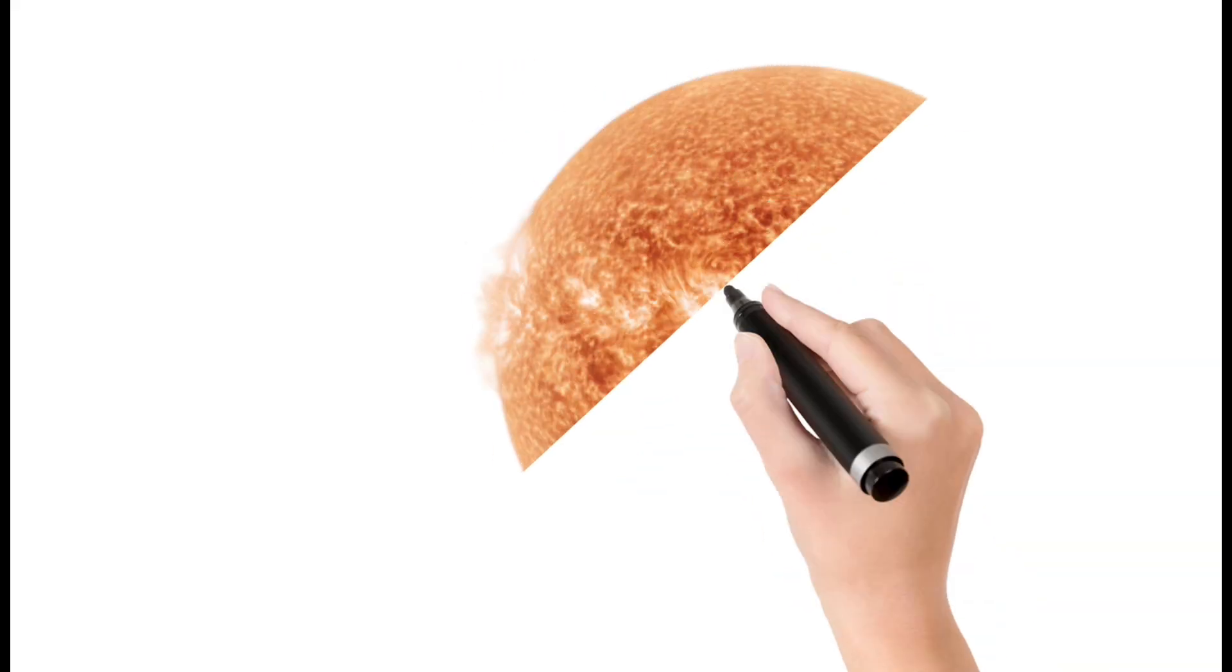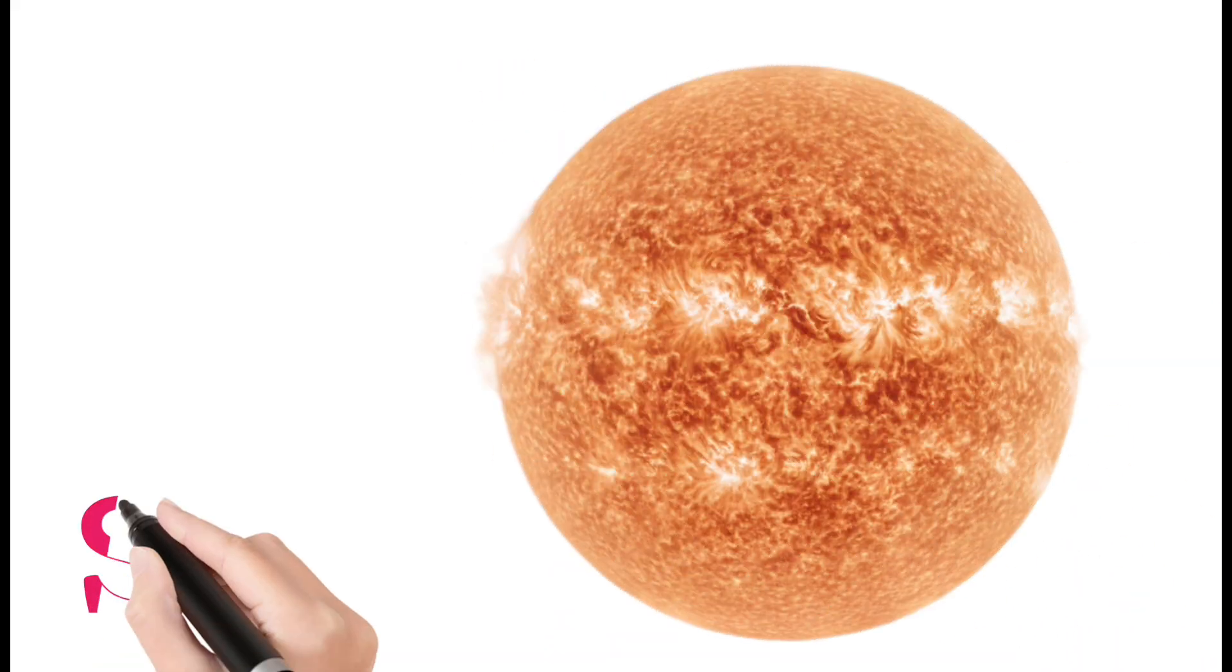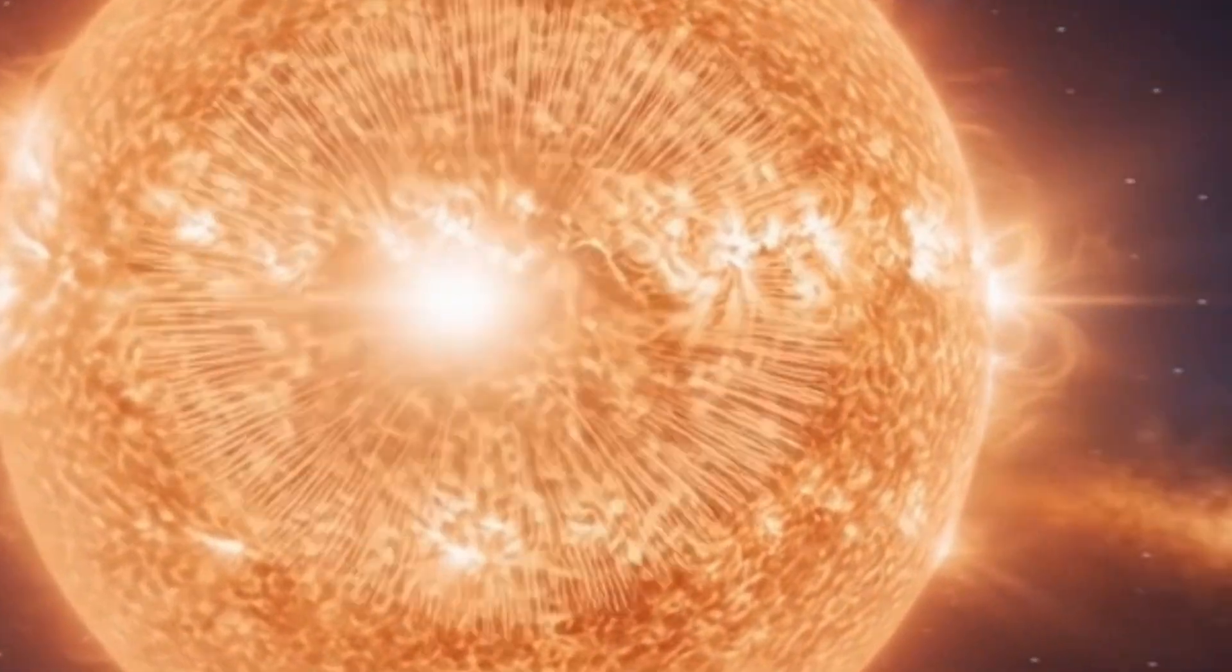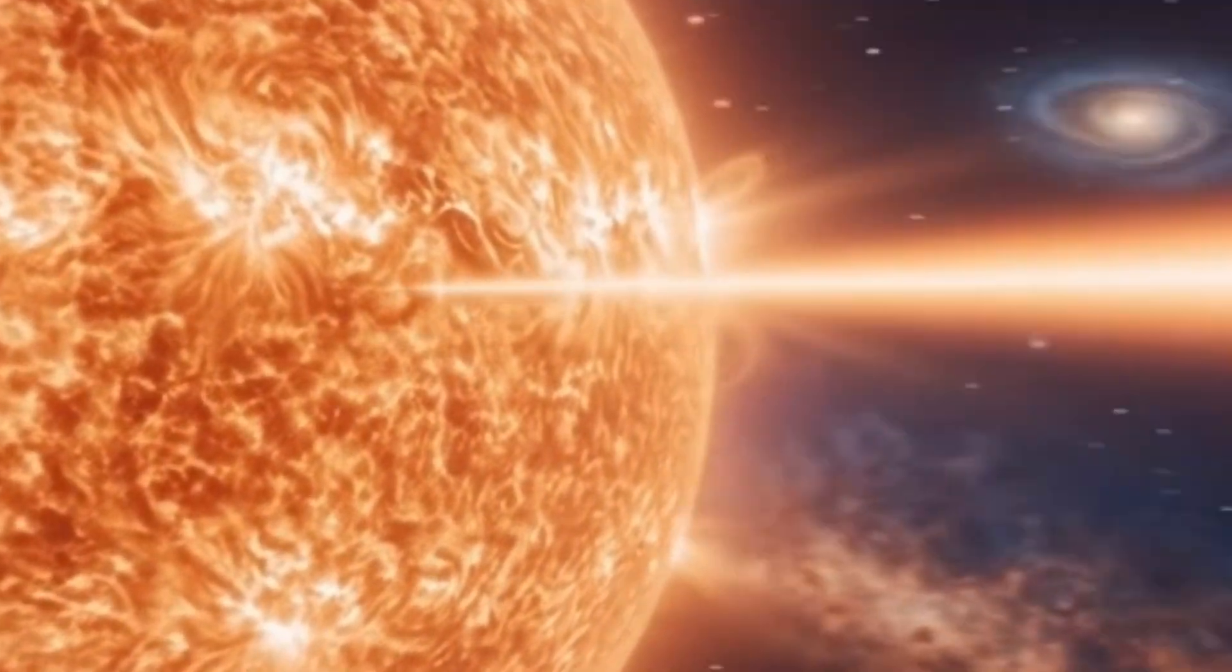First, Sun. The Sun is a massive star at the center of our solar system. It provides heat and light necessary for life on Earth. The Sun is made mostly of hydrogen and helium.